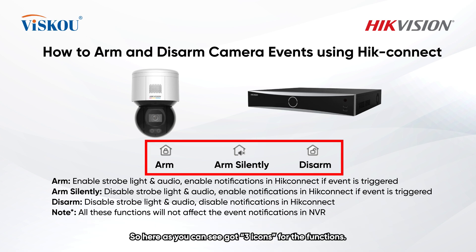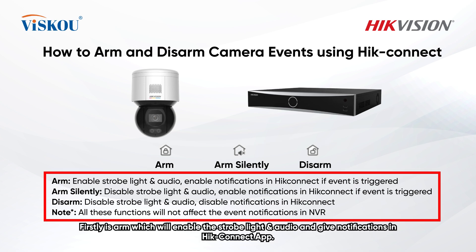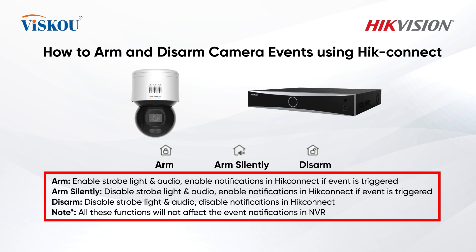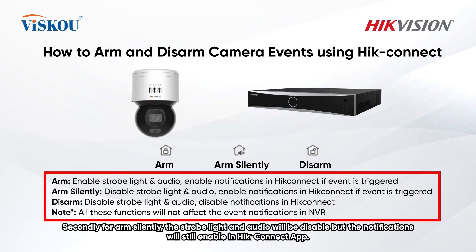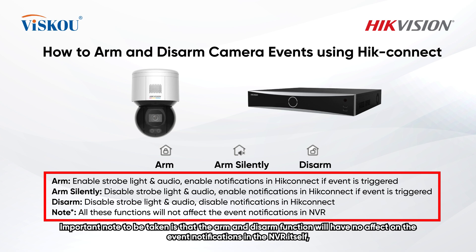Here you can see three icons for the functions. First is Arm, which will enable the strobelight and audio and give notifications in the HikConnect app. Second, Arm Silently — the strobelight and audio will be disabled, but notifications will still be enabled in the HikConnect app. Third is Disarm, which will disable strobelight and audio and also disable notifications in the HikConnect app.